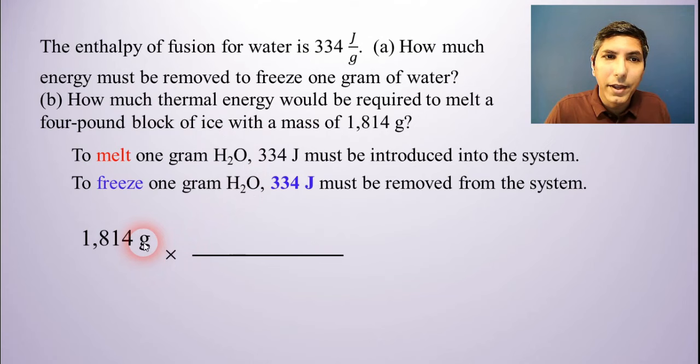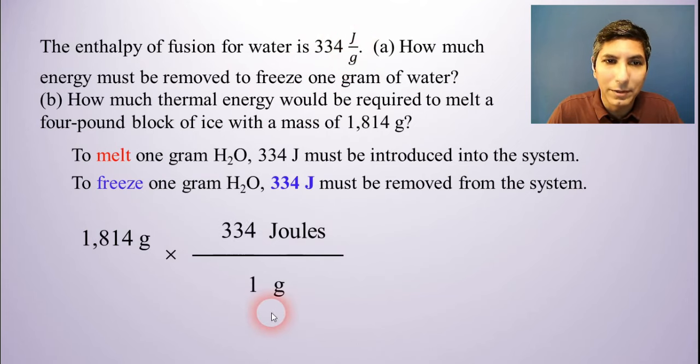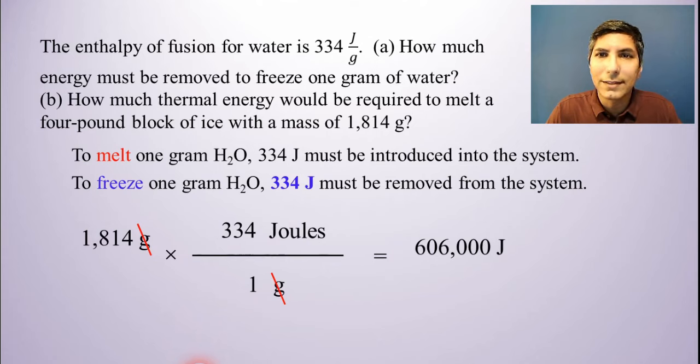We start with 1,814 grams, and we're trying to convert to joules because it says how much thermal energy. So in our conversion factor, we have to put grams on the bottom and joules on the top. And the numbers for this conversion factor come right out of that enthalpy of fusion. It's 334 joules per one gram. So it's going to be like this. And when you cancel grams, you can multiply across, and we have an answer of about 606,000 joules. So that's a lot of joules, isn't it? In fact, it's so many, it's probably more convenient to write this in kilojoules and just say it's 606 kilojoules.